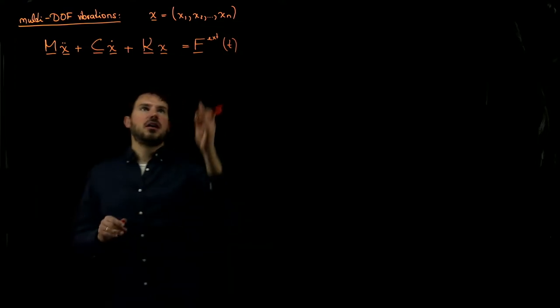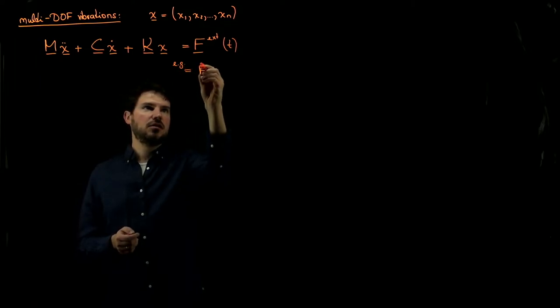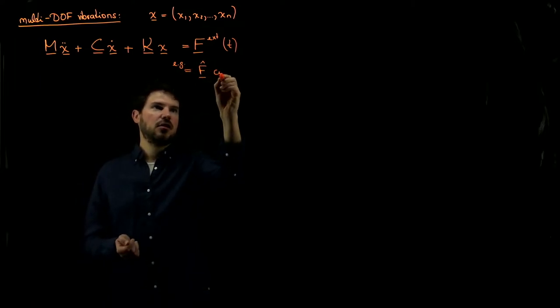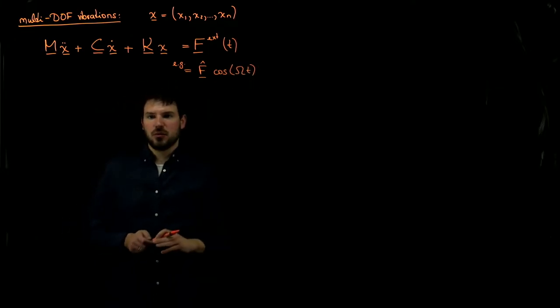And here, just like in the single degree of freedom case, we could for example have an excitation of the type f hat vector times cosine omega t, where capital omega is the excitation frequency.